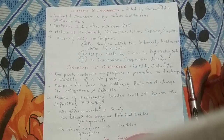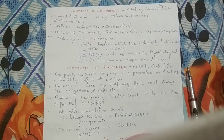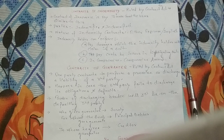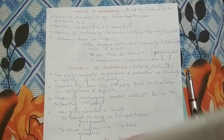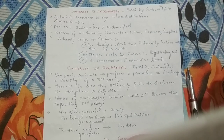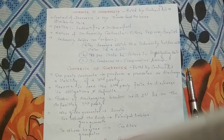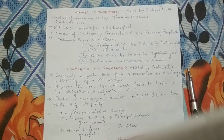The contract of guarantee is also ruled by the Contract Act of 1882, along with the contract of indemnity. In a contract of guarantee, one party contracts to perform a promise or discharge a liability of a third party. The guarantee is given by a third person — for example, a bank gives a guarantee to the government on behalf of a contractor. This is an example of a contract of guarantee.